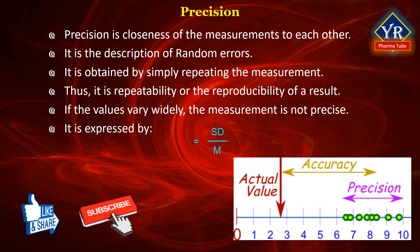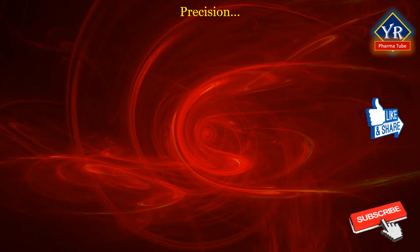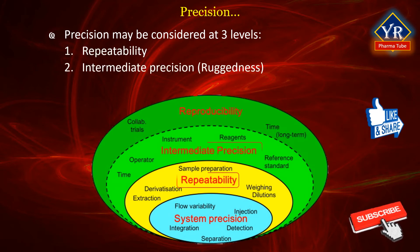Precision is usually expressed as the standard deviation (SD) or the relative standard deviation (%RSD) of the mean of a series of measurements. Good precision does not assure good accuracy. According to the ICH — International Council for Harmonization — document, precision may be considered at three levels: 1. Repeatability, 2. Intermediate Precision, 3. Reproducibility.